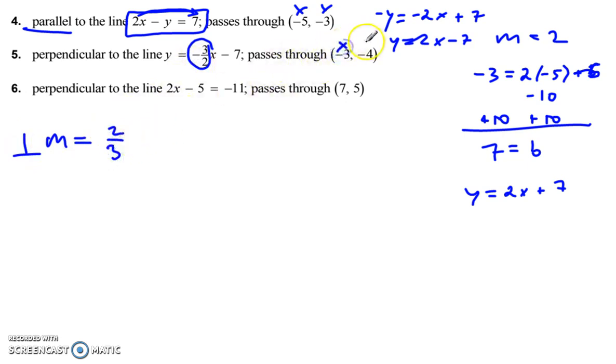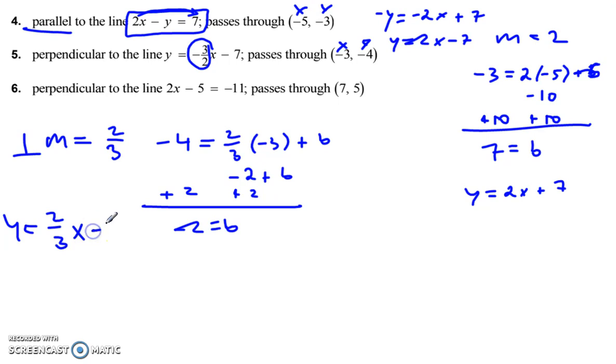Passes through x and y. Same procedure, right? Plug in negative 4 is equal to 2 over 3 times negative 3 plus b. 2 thirds times negative 3. 2 times 3 is 6. Divided by 3 is 2. Positive times a negative gives me negative 2 right there plus b. Add 2 to each side plus 2. Negative 4 plus 2 is negative 2 is b. So y is equal to 2 thirds x minus 2.